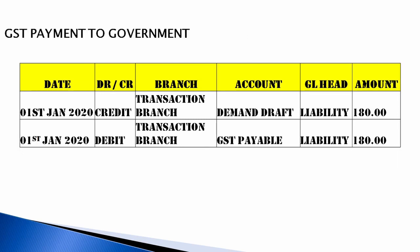For GST payment to the government, whatever amount has been credited to the GST payable account is debited and credited to a demand draft or pay order account.